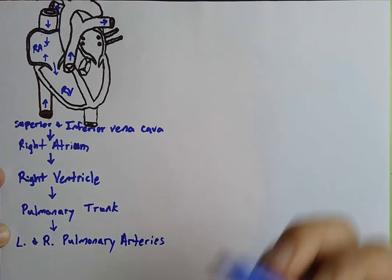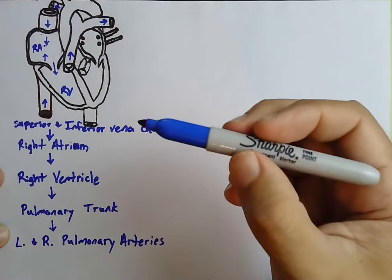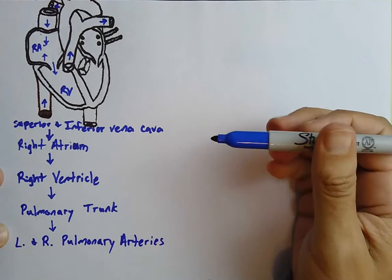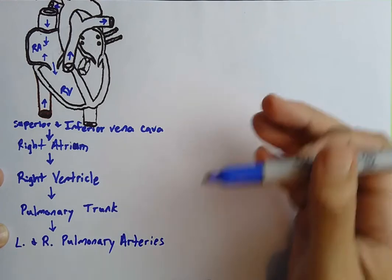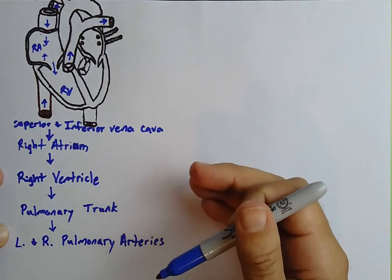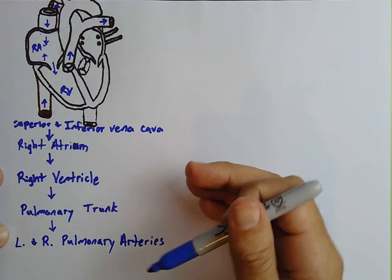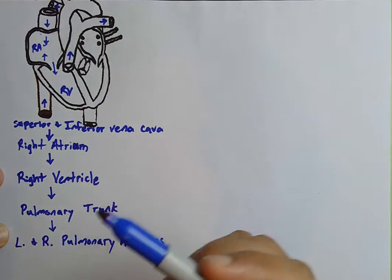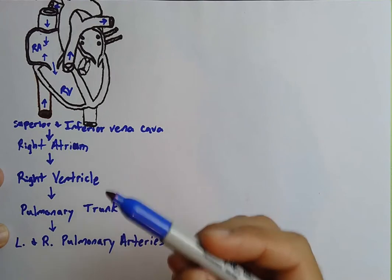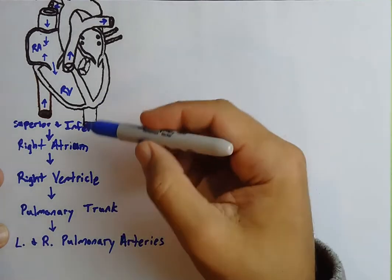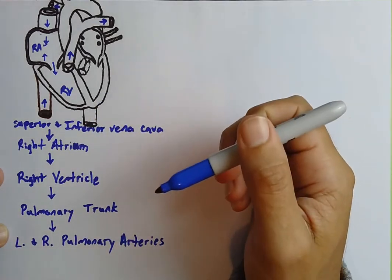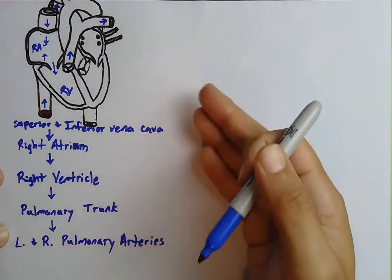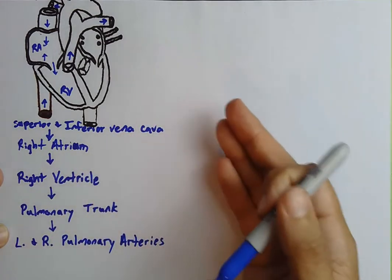You might be wondering why I've been drawing in blue this whole time. Poorly oxygenated blood is actually a dark red color, but in textbooks and diagrams we always use blue to depict poorly oxygenated blood. It's easier to differentiate from red, and red represents oxygenated blood.